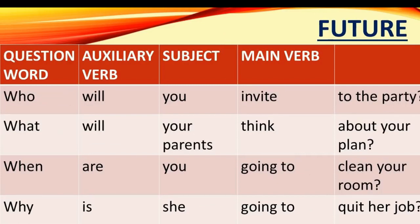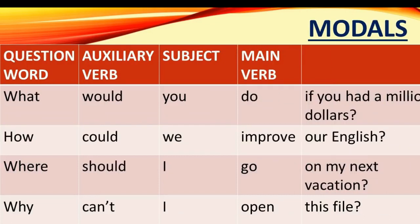To form questions in the future, we can use 'will' or 'going to', but the formula still applies. For example: Who will you invite to the party? What will your parents think about your plan? When are you going to clean your room? Why is she going to quit her job? We can also use the QUASM formula for making questions with modal verbs: What would you do if you had a million dollars? How could we improve our English? Where should I go on my next vacation? Why can't I open this file?